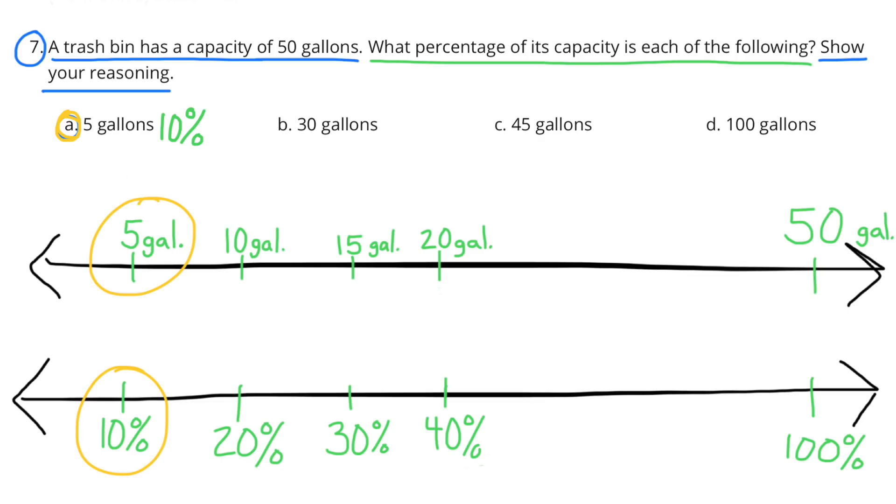Number 7. A trash bin has a capacity of 50 gallons. What percentage of its capacity is each of the following? Show your reasoning.